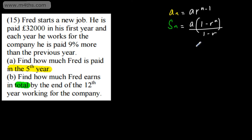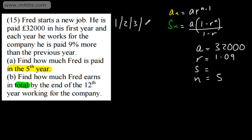Let's go ahead and look at part A, and we'll collect some information. A, R, S, and N. This is the part A, and we want to find the value of this. We're just looking for a term. 32,000 is A. The ratio, he's paid 9% more. That, therefore, is 1.09. And the value of N is the fifth year. This is the fifth term. If you think first year, first term, second year, second term, third year, third term, fourth year, fourth term, fifth year, fifth term.